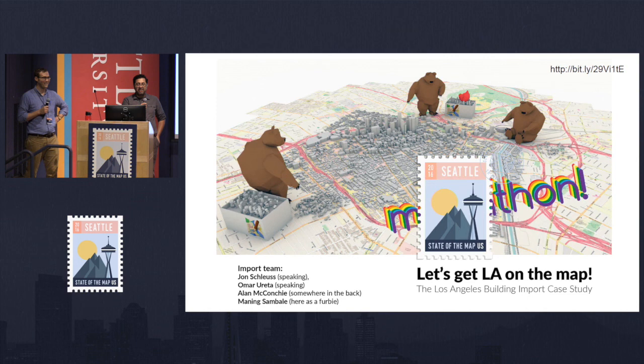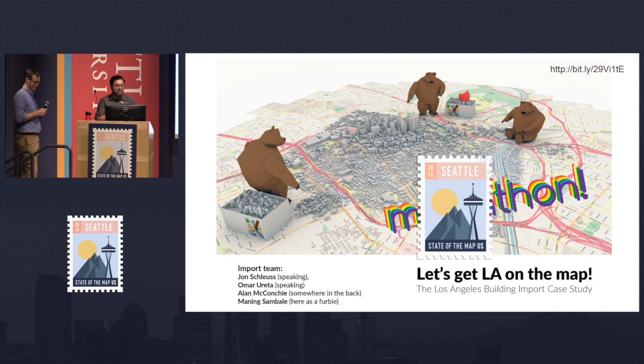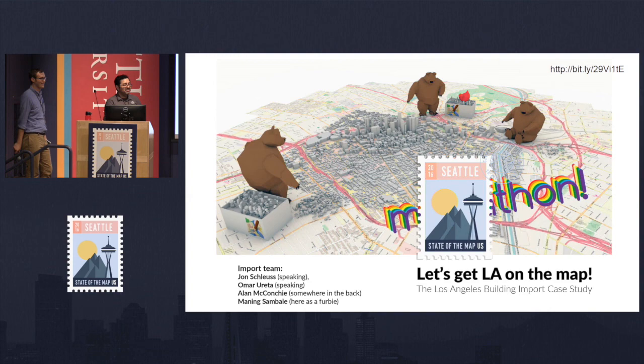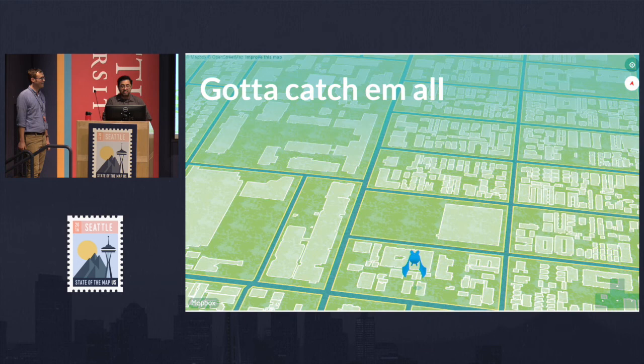We're going to talk about the Los Angeles building import case study. The import team really consisted of a lot of people, but four people that really contributed effortlessly are John Schultz, myself, Alan McConkie — who's somewhere out there — and Manning Simbali, who works for Mapbox. This is some tiles that Mapbox created that look like Pokemon Go but use OpenStreetMap data. Pokemon Go uses Google data. This is actually my neighborhood, and our thought is: we have to catch all the buildings. All the buildings must get on the map.